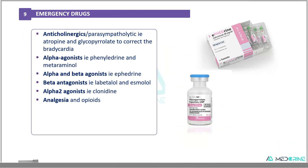During the surgical procedure or during maintenance of anesthesia, we may need some emergency drugs to be on hand, for example: anticholinergic agents such as atropine and glycopyrrolate, which are used to correct bradycardias; alpha agonists such as phenylephrine and metaraminol, used in cases of hypotension; and alpha and beta agonists like ephedrine. Beta agonists such as salbutamol and esmolol are used to counteract high blood pressures. Alpha-2 agonists such as clonidine, and analgesic opioid drugs are also kept available.